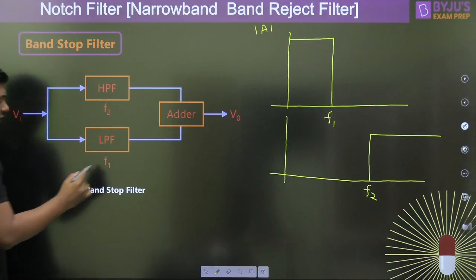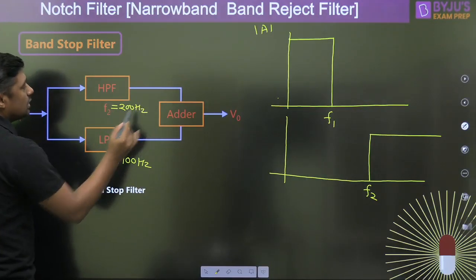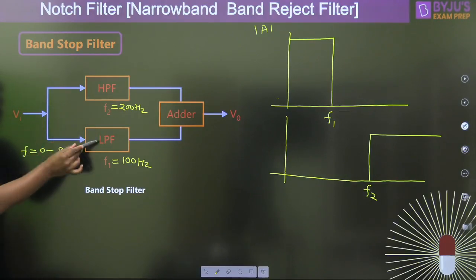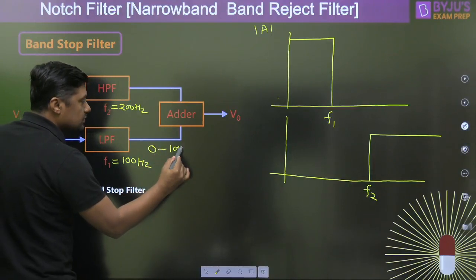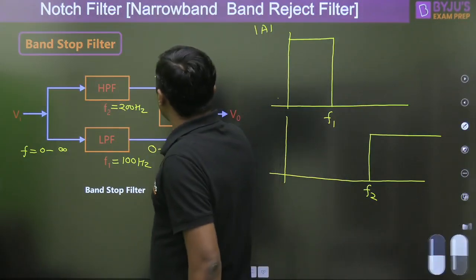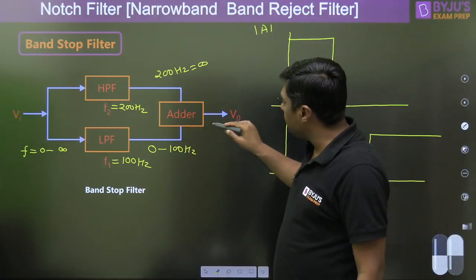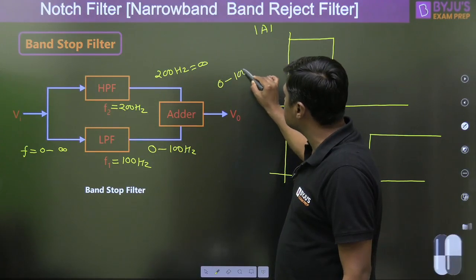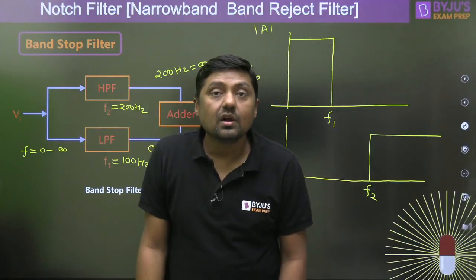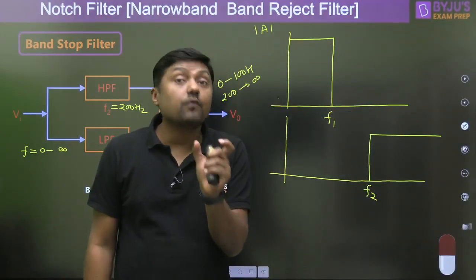For a numerical example, let F1 equal 100 Hz and F2 equal 200 Hz, with input frequency from 0 to infinity. The low pass filter passes frequencies from 0 to 100 Hz, and the high pass filter passes from 200 Hz to infinity. So at the output we get the signal from 0 to 100 Hz and from 200 Hz to infinity. The signal between 100 Hz and 200 Hz is stopped by this filter.